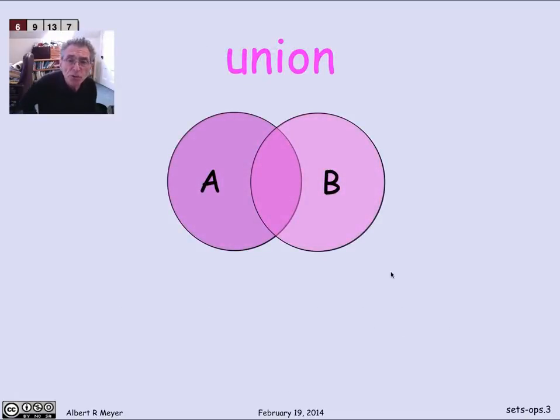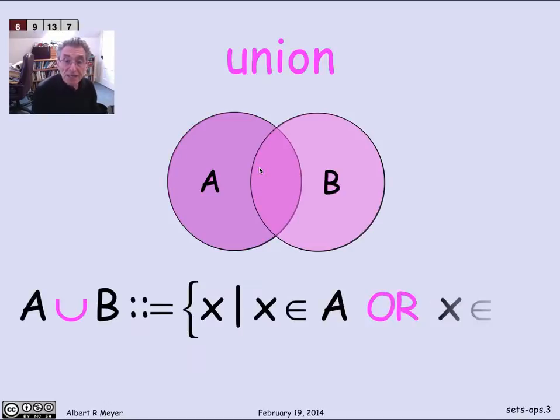So the first operation is union. It's the set of points shown here in magenta, the set of points that are in either A or B. In set theoretic notation, the U is the union symbol. So A union B is defined to be those points x that are in A or are in B. And you can already begin to see an intimate relationship between the union operation and the propositional OR connective.